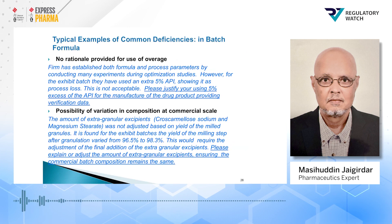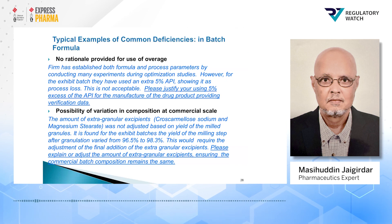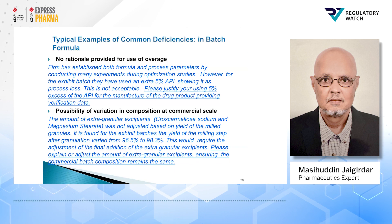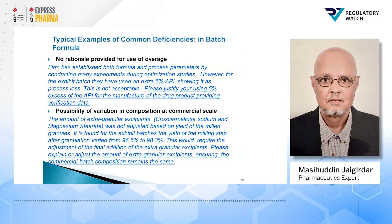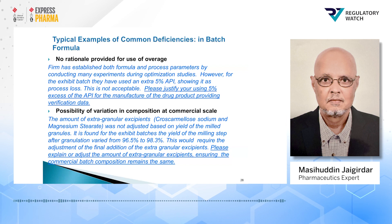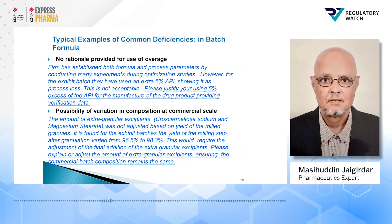Another example: no rationale provided for use of overage. The firm has established both formula and process parameters by conducting many experiments during optimization studies. However, for the exhibit batch, they used an extra 5% drug substance (API), showing it as process loss. This is not acceptable to the agency. Please justify your use of 5% excess of the API for the manufacture of the drug product, providing verification data. Simply stating that you are using 5% excess is not acceptable, and a deficiency will be issued.